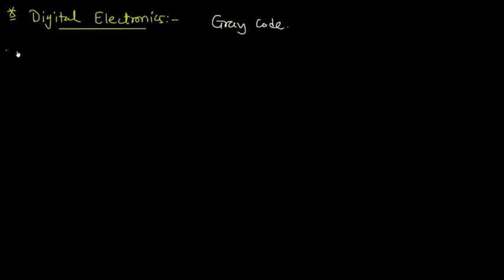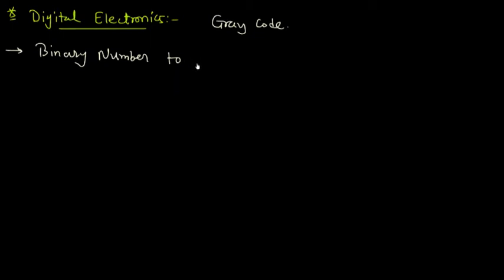In this video, we are going to discuss how to convert a binary number to grey code. Before we start the process of conversion from binary to grey code, let us discuss one logic gate which is used in the conversion process — and that is the XOR gate.